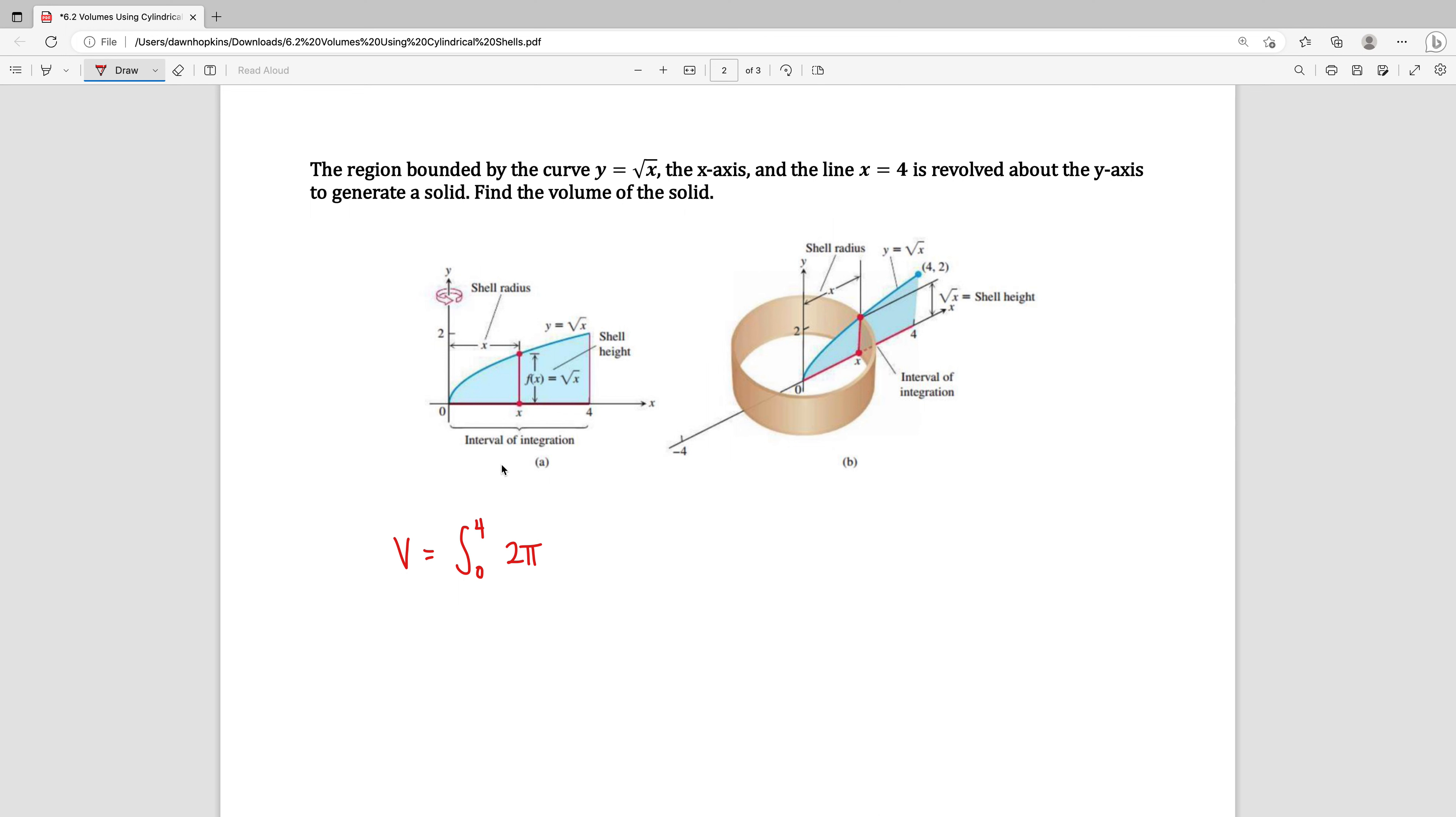The radius is the distance from the axis of revolution to your X coordinates. So in this case it's just going to be the X value. That's your radius. The height is going to be the corresponding Y value. Since Y equals the square root of X, that's going to be the height, the square root of X.